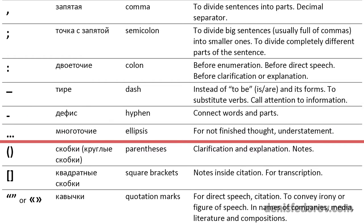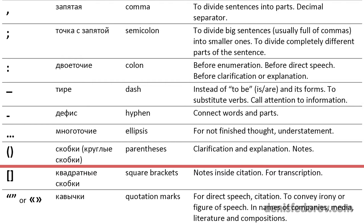Ellipses — многоточие in Russian — we use the same as in English, usually when the thought is not finished or has suddenly stopped in the middle. Parentheses — скобки in Russian, officially круглые скобки, but we just say скобки (or brackets in English) — we use them the same as in English: to clarify, explain or complement the thought. So as in English we insert in parentheses some single words, phrases or sentences to explain, clarify or complement something.